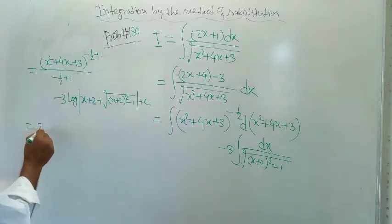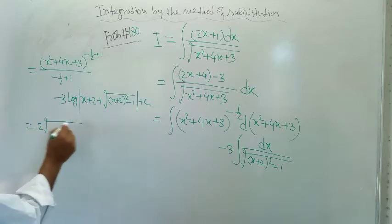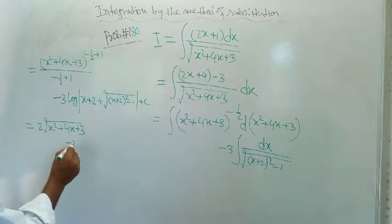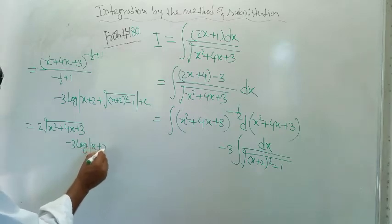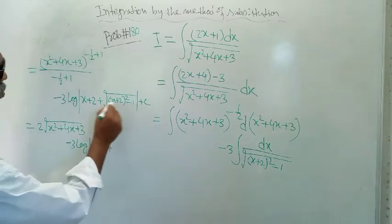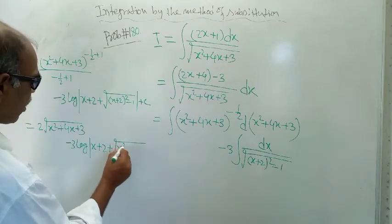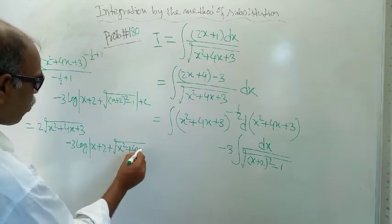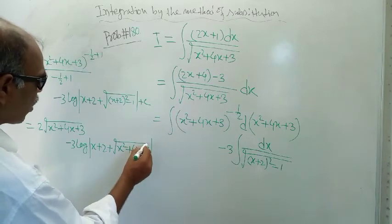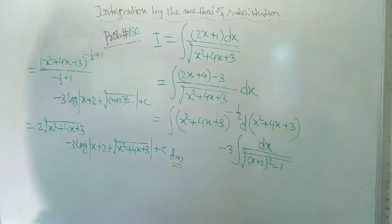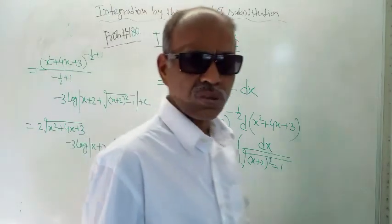So what is the result? From here we are getting 2 under root x square plus 4x plus 3, and minus 3 log of x plus 2 and root over x square plus 4x plus 3. This is the answer to the given problem.